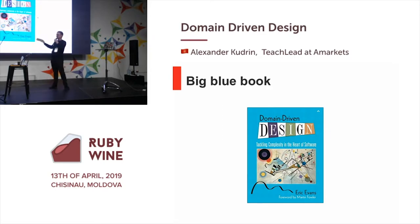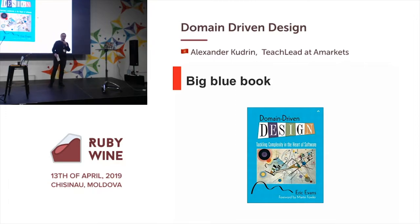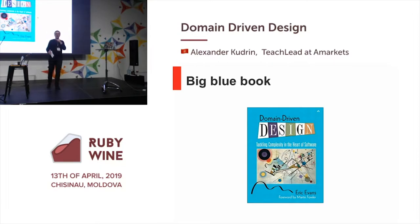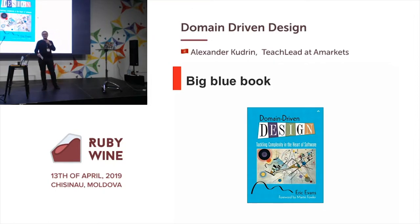This book consists of three parts. The first one is about methodology, the second one is about technology, and the last one is about methodology again. A really typical mistake of programmers is they don't read any text — they read only code examples. But in fact, the methodology is more important than the technology.